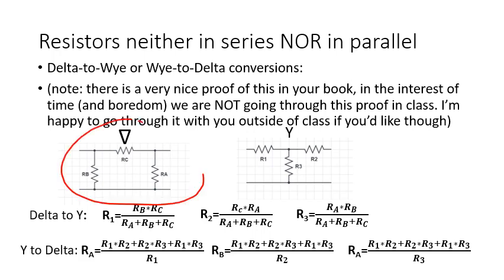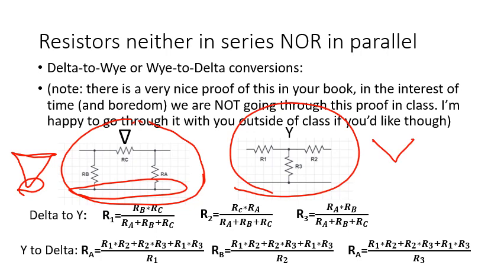So for example, I could have this delta configuration here with RA, RB, and RC. We called it a delta because it could also look like a triangle. Or I could have a Y configuration like this. And to convert between these, I can convert from a delta to a Y this direction or from Y to a delta if I overlay them.